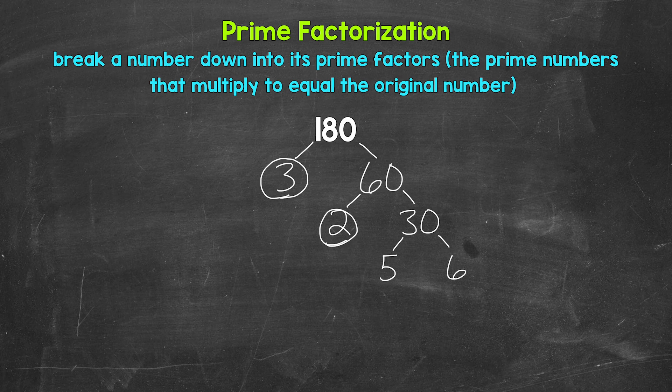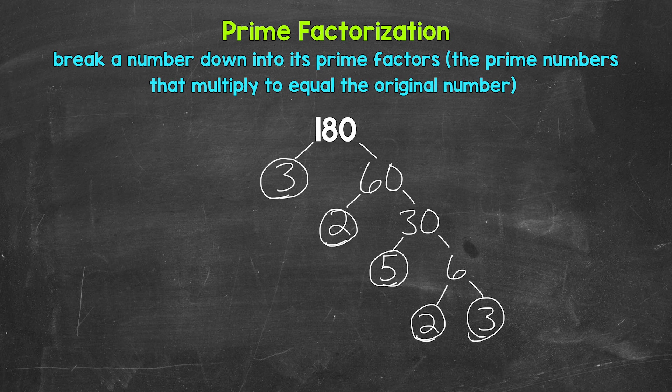5 is a prime number, so we are done here. But we can break 6 down. So factors of 6, well, 2 and 3. 2 times 3 equals 6. So let's break 6 down into 2 and 3. Both 2 and 3 are prime numbers, so we are done here and here.